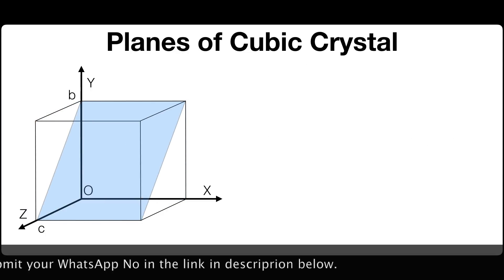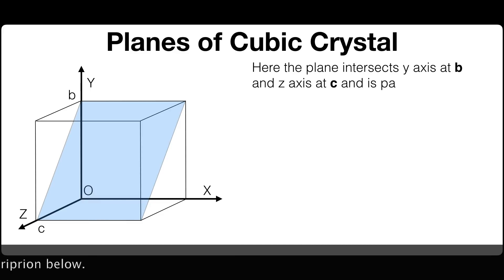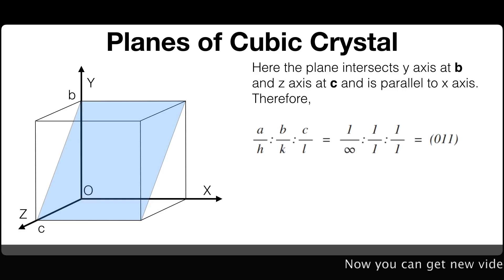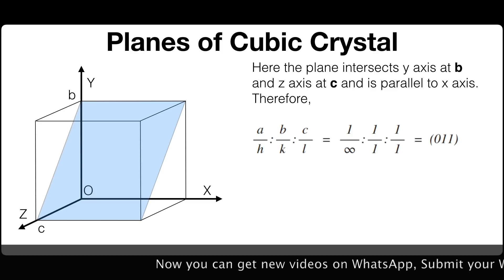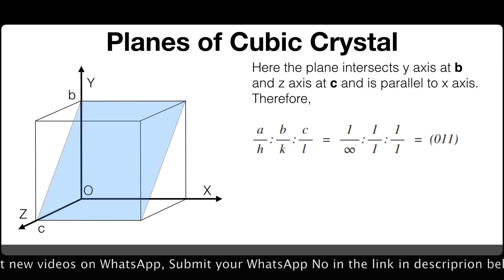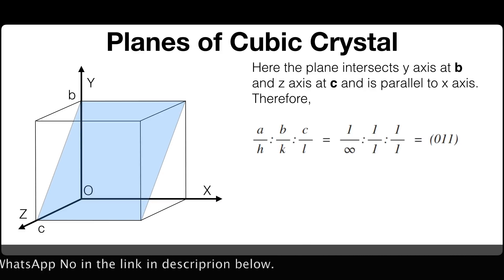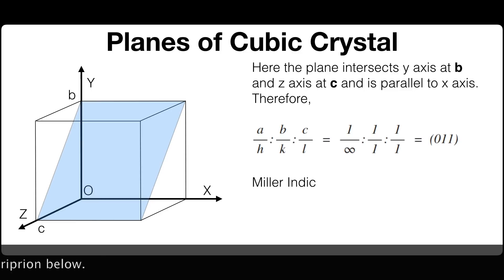Here the plane intersects the y-axis at B and the z-axis at C, and is parallel to the x-axis. Therefore the ratios A/H : B/K : C/L = 1/∞ : 1/1 : 1/1, which equals 0, 1, 1. Therefore the Miller indices of this plane is (0 1 1).